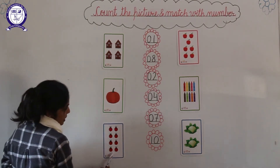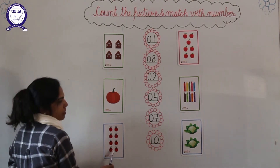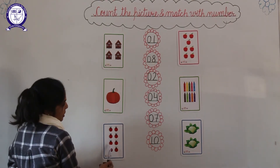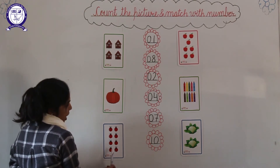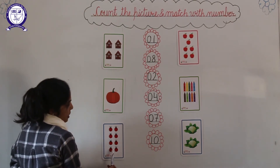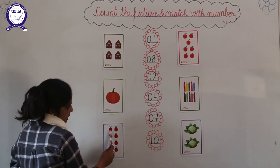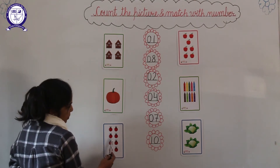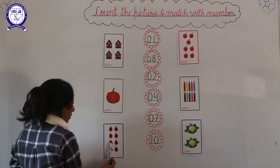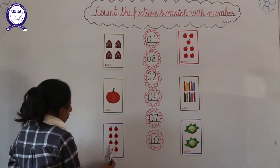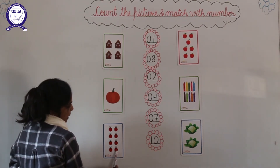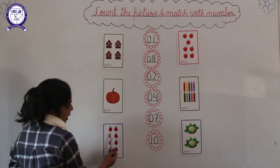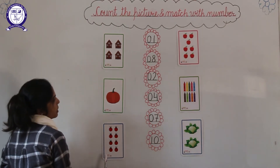And the next picture is this — ladybird. These are ladybirds. How many ladybirds are there? 1, 2, 3, 4, 5, 6, 7, 8. There are 8 ladybirds.